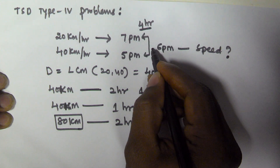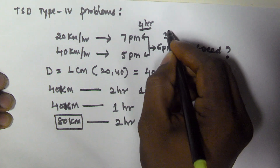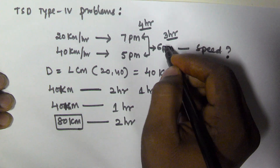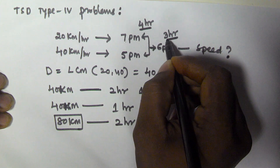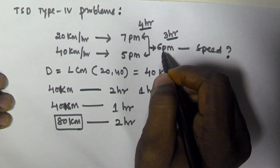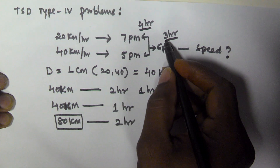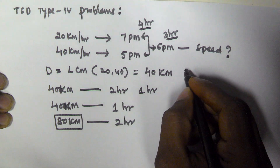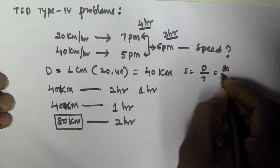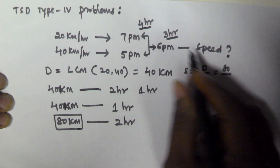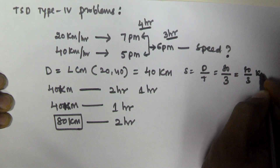So to reach at 6 pm he has to travel 3 hours only. Because if he travels for 4 hours he reaches at 7 pm, so if he travels 3 hours he will reach at 6 pm. The total distance is 80 km and he has to travel 3 hours, so the speed is distance by time — 80 km divided by 3 hours.